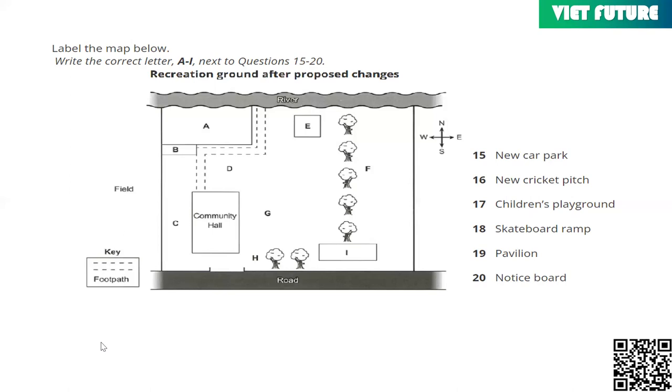We've got plans for a children's playground, which will be accessible by a footpath from the community hall, and will be alongside the river. We'd originally thought of having it close to the road, but we think this will be a more attractive location.